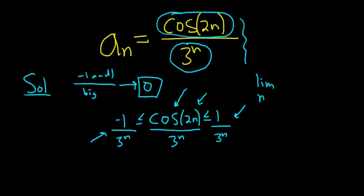We take the limit of the left-hand side. It's negative 1 over something that's getting really big, so this is 0. We take the limit of the right-hand side. It's 1 over something that's getting really big, so this is 0.